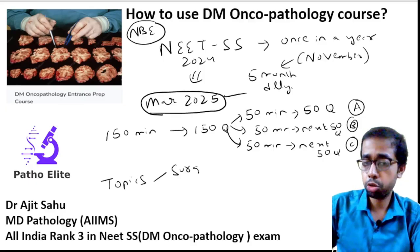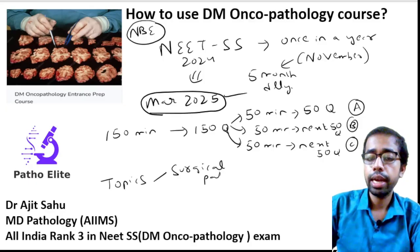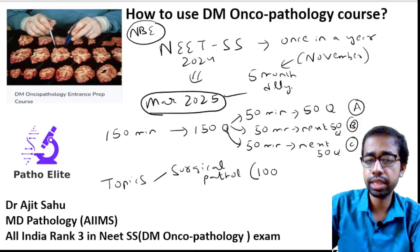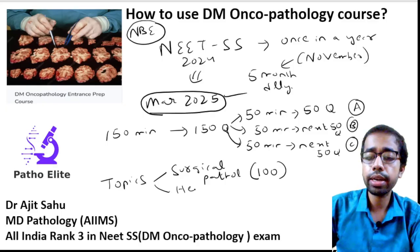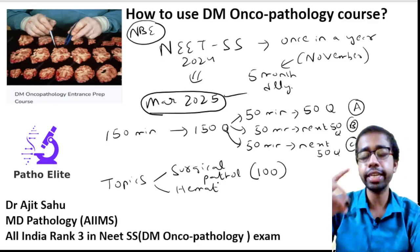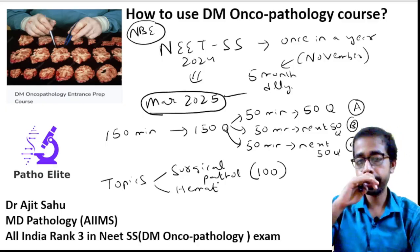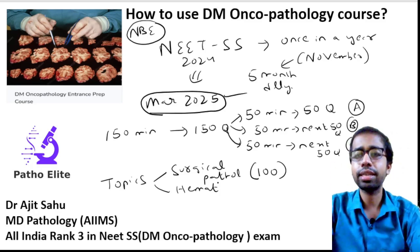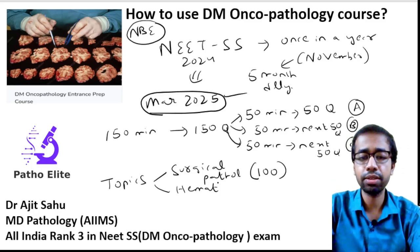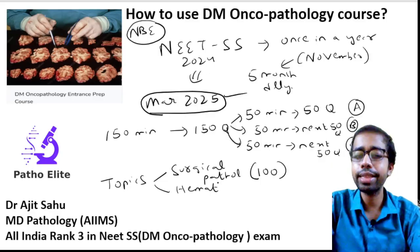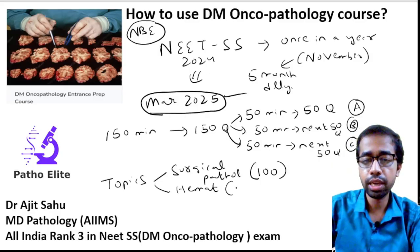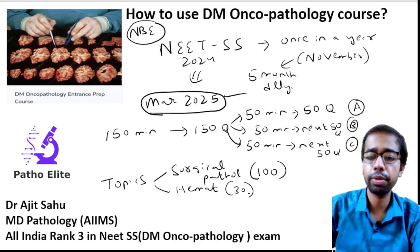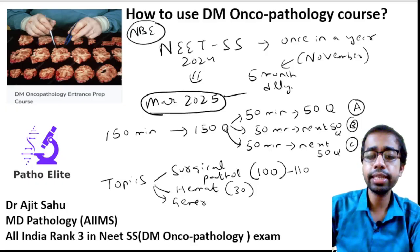From surgical pathology we got around 100 to 110 questions. From hematopathology they won't go into much detail but will ask basics - for example, this time they asked in which hemolytic anemia bite cells are seen. From hematopathology we got around 30 questions, and 100 to 110 from surgical and general pathology.